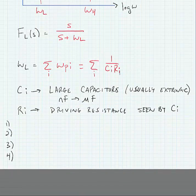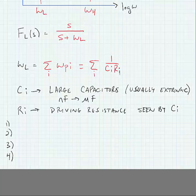Now, what are CI and RI? CI are the large capacitors in the circuit. These are typically extrinsic capacitors that we add for things like decoupling and bypassing. They're going to have values in the nanofarad to microfarad range. RIs are the driving resistances seen by each of those individual CI capacitors.